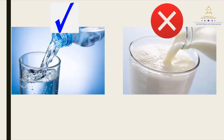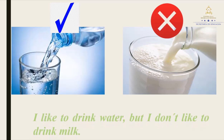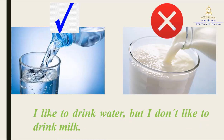Now, tell me what can you observe in the first picture. Water. That's right, we need water, right? And the other one is milk. I like to drink water, but I don't like to drink milk. Excellent. So repeat after me: I like to drink water, but I don't like to drink milk.